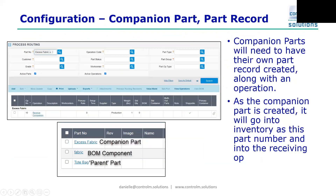Let's talk about the configuration of the companion part. In order for companion parts to work properly, they have to have their own part record within PLEX along with an operation on the process routing. Those operations are generally set to a receiving operation, and we use those receiving operations so that the companion parts can show up on MRP. In our example, we have our parent part — the tote bag — with a BOM component of fabric, and those two together create the companion part of excess fabric.